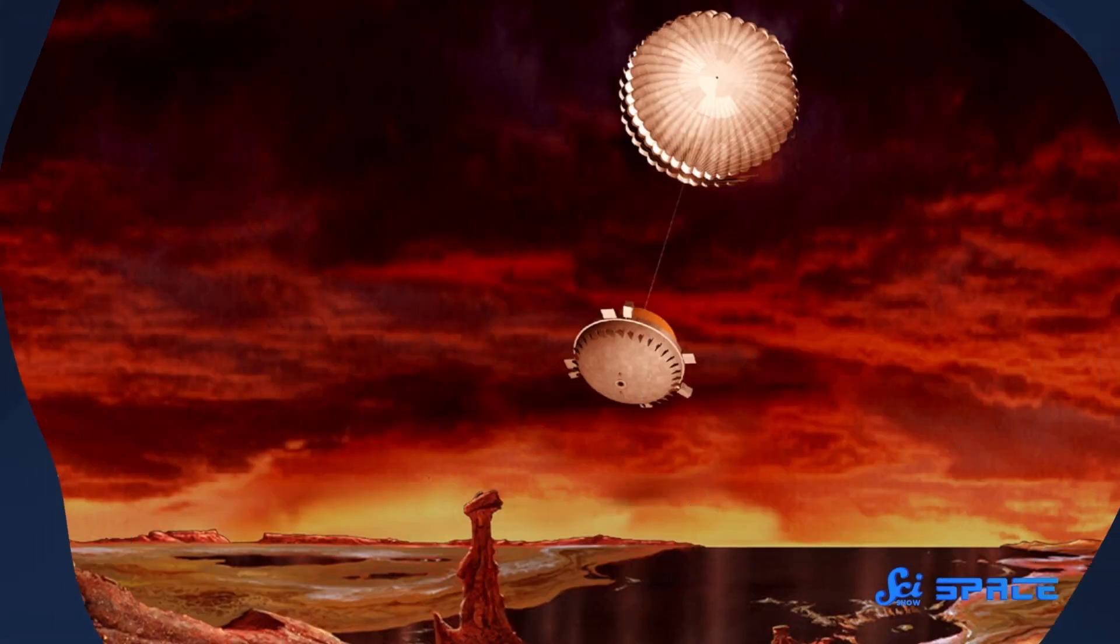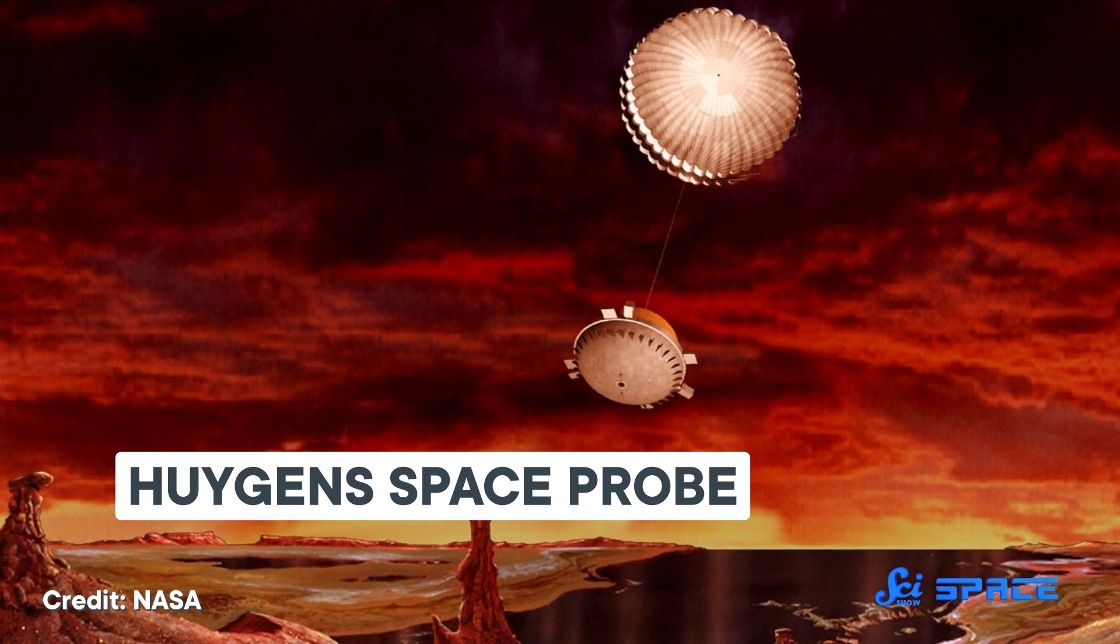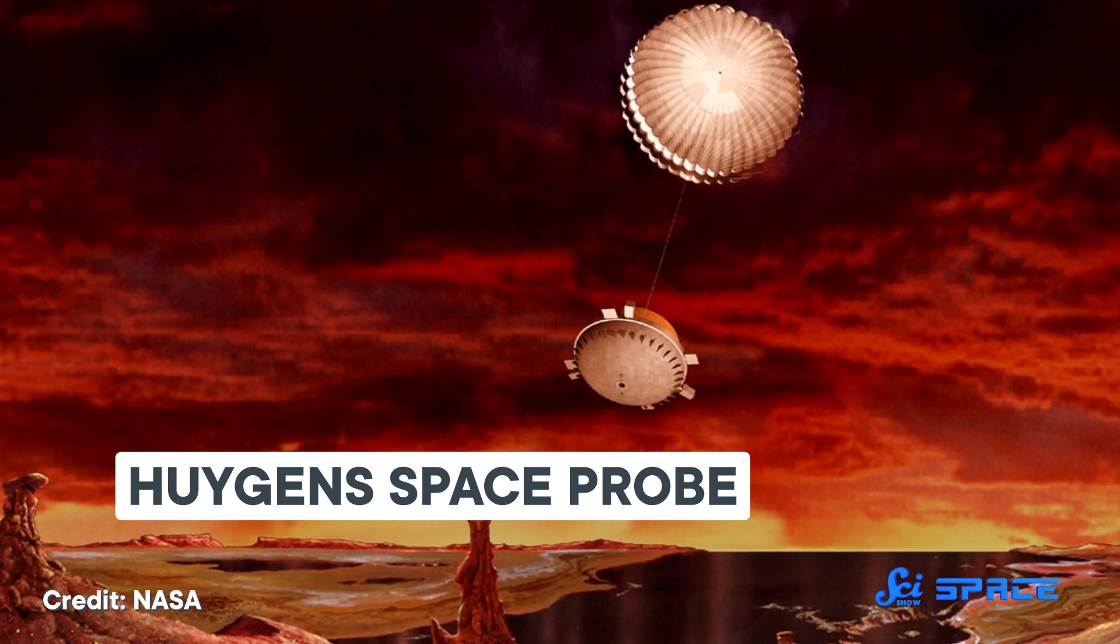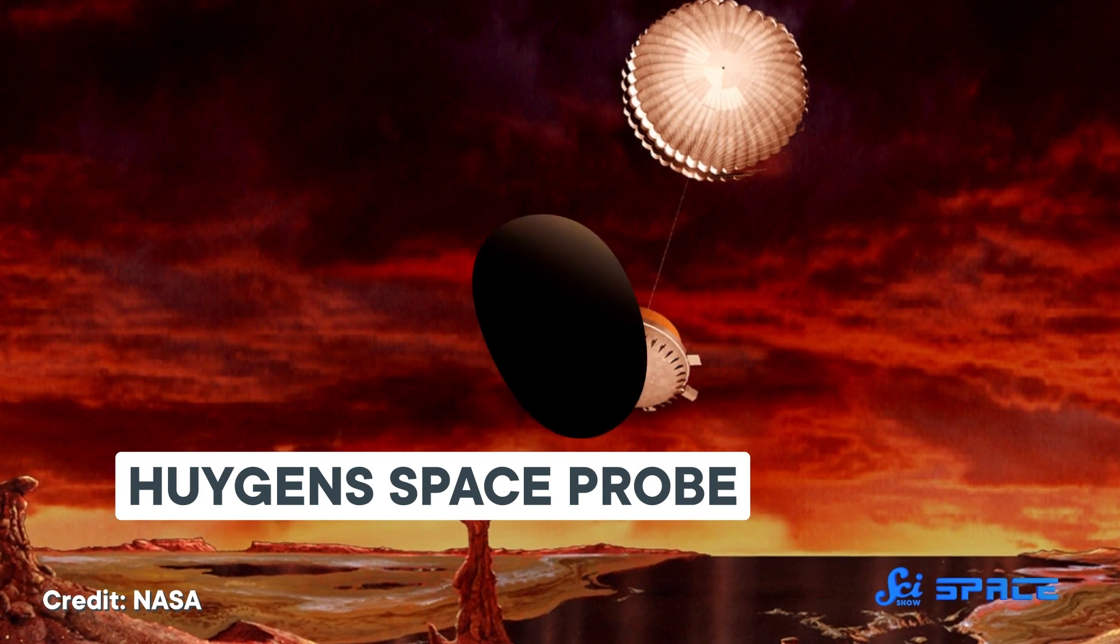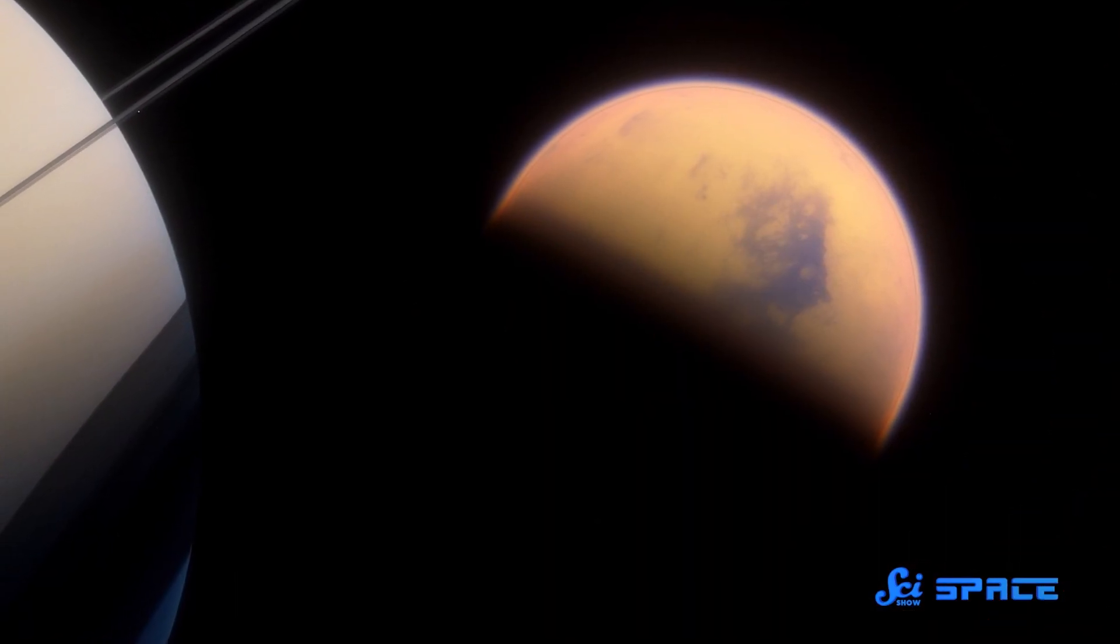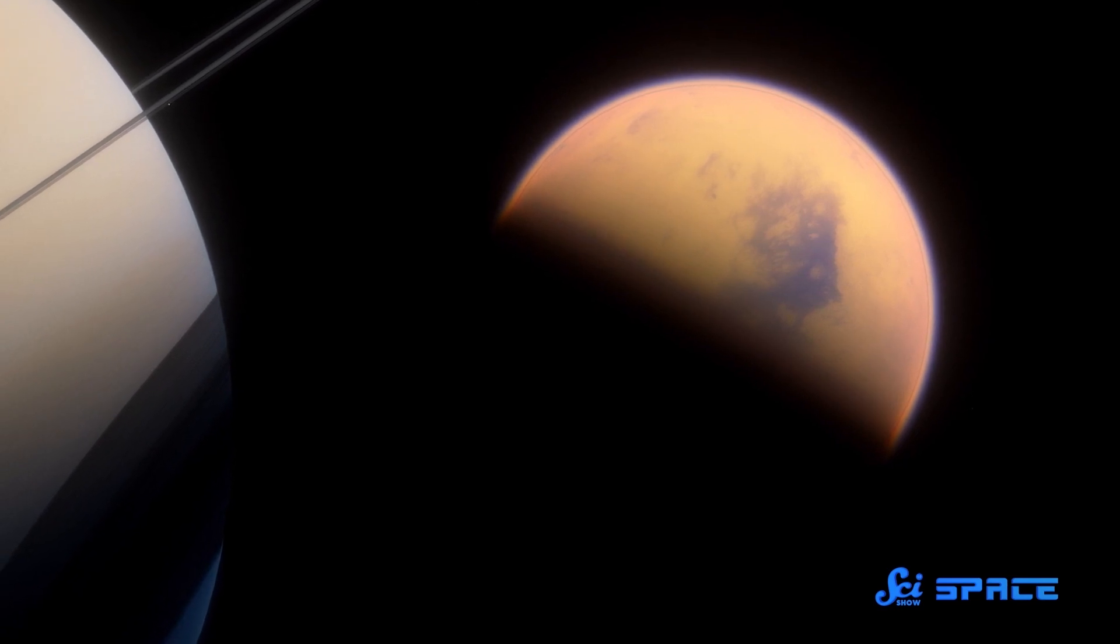It was a while before scientists pulled off anything like that again. But in 2005, the Huygens space probe carried a microphone that listened in on its whole descent onto Saturn's moon Titan. Originally, NASA hoped the microphone might pick up sounds of thunder in Titan's atmosphere.